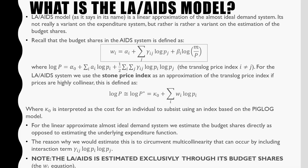What is the Linear Approximate Almost Ideal Demand System? The Linear Approximate Almost Ideal Demand System is, as its name says, a linear approximation of the Almost Ideal Demand System. It's not really a variant on this expenditure system, but rather a variant on the estimation of the budget shares.